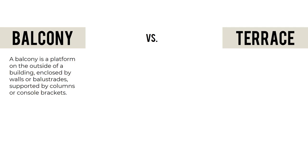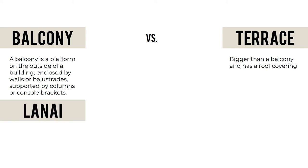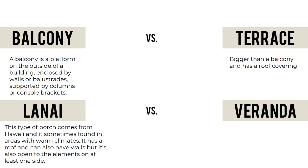A balcony is a platform on the outside of a building, enclosed by walls or balustrades, supported by columns or console brackets — usually cantilevered. A terrace is bigger than a balcony and has a roof covering. A lanai is a type of porch from Hawaii, common in warm climates, with a roof and open to the elements on at least one side. A veranda is a roofed platform around the house.